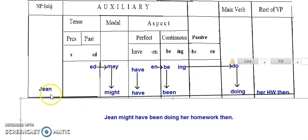Now we have to check our work and make sure everything in the sentence is written: Jean might have been doing her homework then. So we wrote every single word in the sentence in the table, and that's it. That's how we do the affix hopping. Good luck.